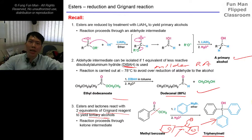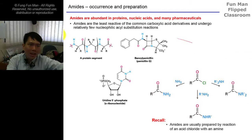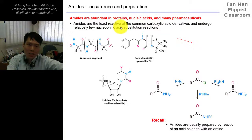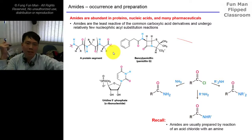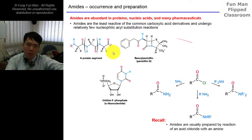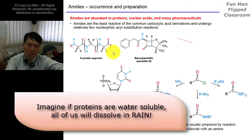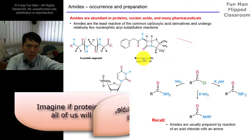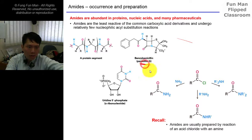The final product is triphenylmethanol, with a very high yield of 96%. Amides are abundant in proteins, nucleic acids, and many pharmaceuticals. We know that they are the least reactive, and that's why they are very good for proteins. Proteins are found in the body as muscles, hair, and nails - these are structural components. Amide bonds are also present in penicillin G and ribonucleic acid.